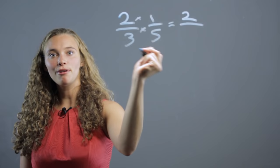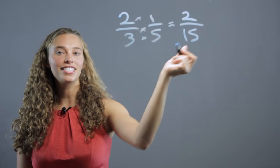We multiply the top numbers, 2 times 1 is 2, and then we just multiply the bottom numbers, 3 times 5 is 15. The answer is 2 fifteenths.